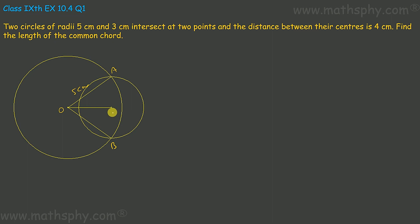Let's take this point and say P. P is the center for the smaller circle. O is the center for the bigger circle. Distance from O to P is 4 centimeters — it's given here. A and B are the points of intersection for the bigger circle and smaller circle. What we have to find out is: what is the distance between A to B?